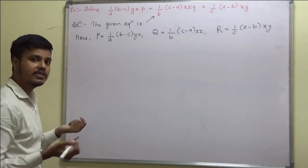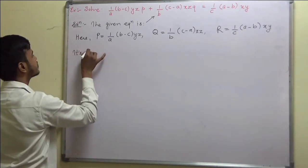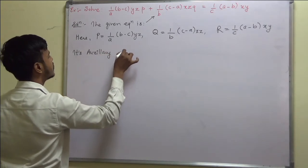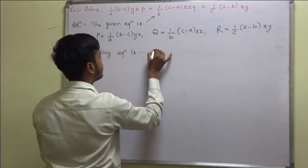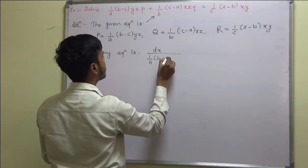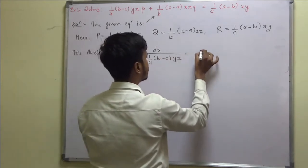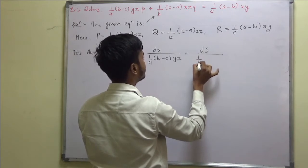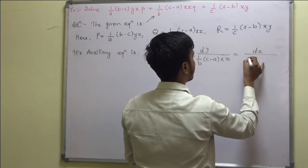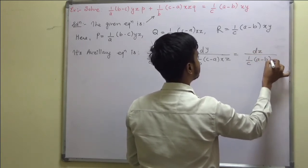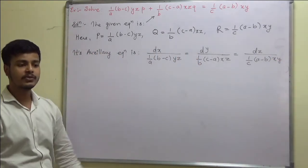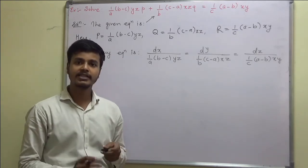After writing this down, just write down its auxiliary equation: dx by 1 by a(b-c)yz, dy by 1 by b(c-a)xz, and dz upon 1 by c(a-b)xy. Now use the multipliers and try to get the solution of this.